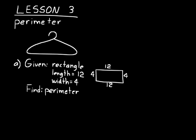To find the perimeter, just add all the lengths together: four plus twelve plus four plus twelve. Adding in pairs, four plus twelve is sixteen, and the other four plus twelve is sixteen, so the total is 32.